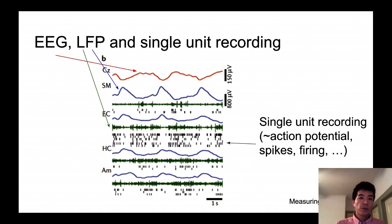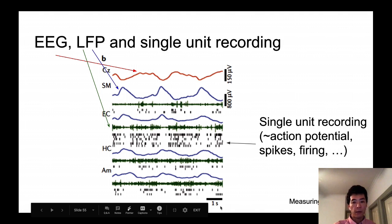So as I mentioned, the CZ at the top of the brain, if you record EEG, it may look like this, very smooth recording, and that is presented over one second here.